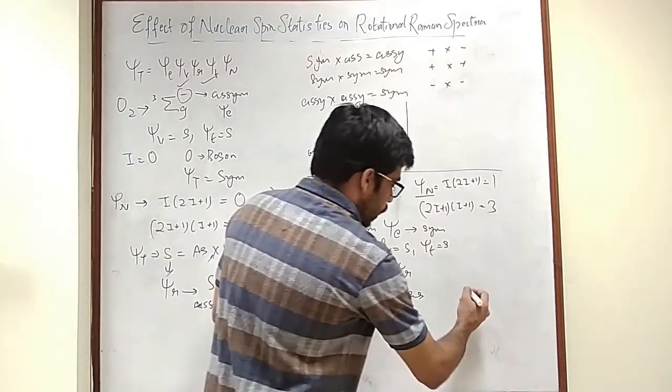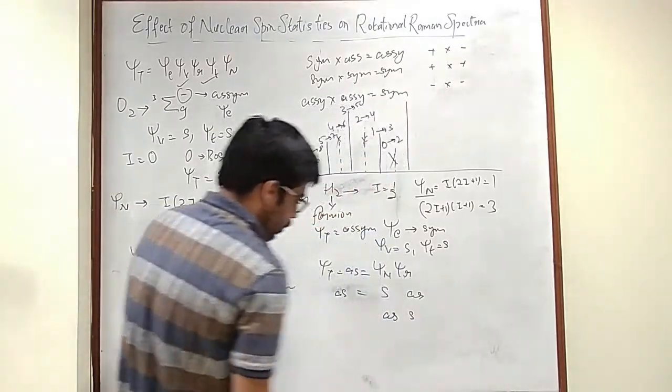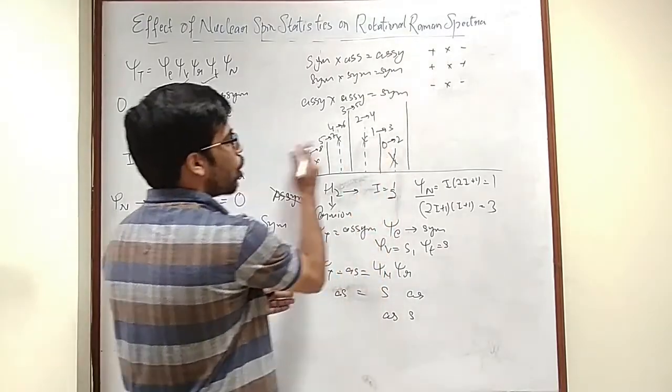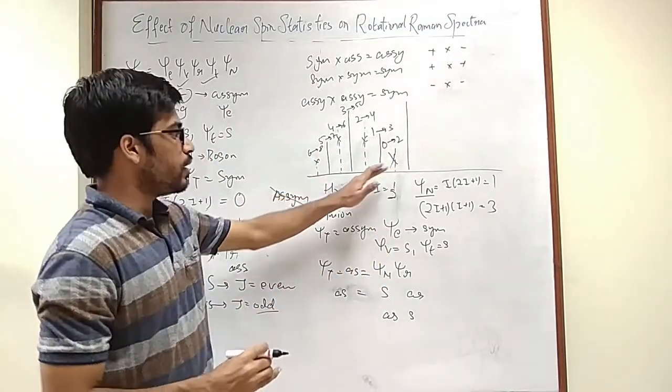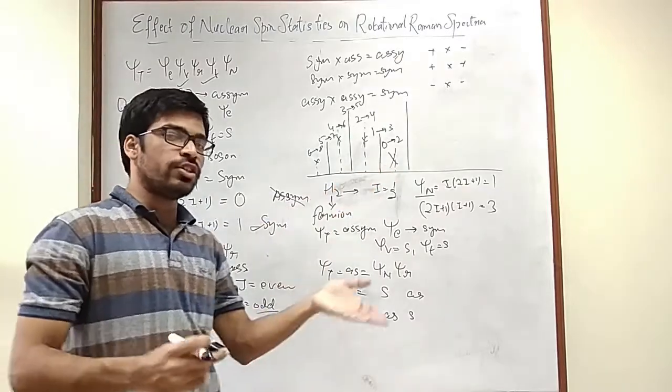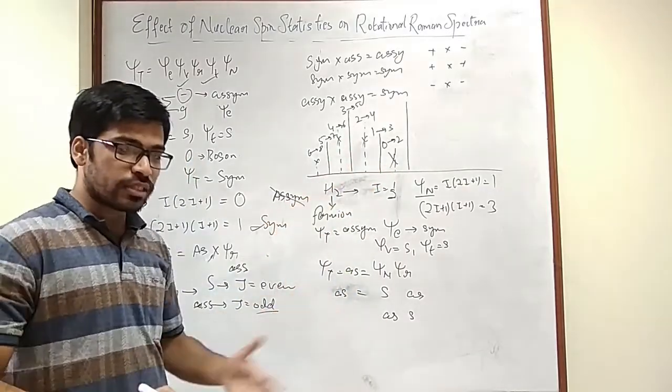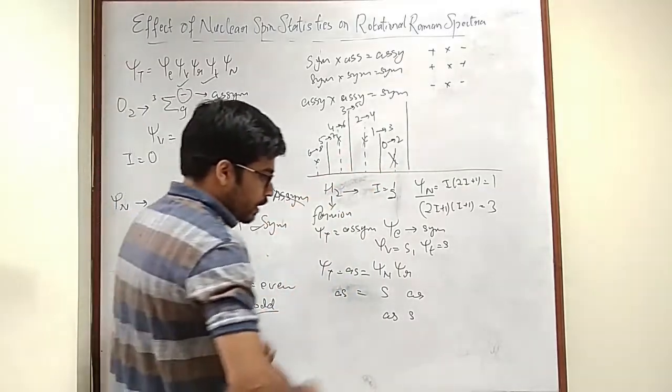So you are going to have all of these peaks. Now it will not be that even peaks arising from even J's are absent. You are going to have all of the peaks. The difference is in the intensity.